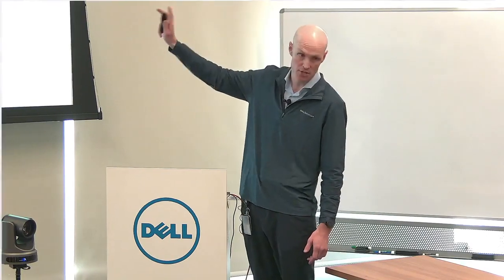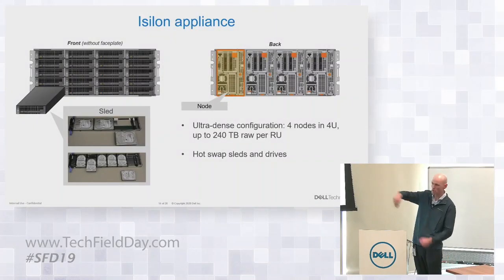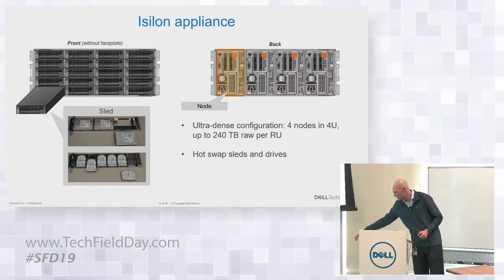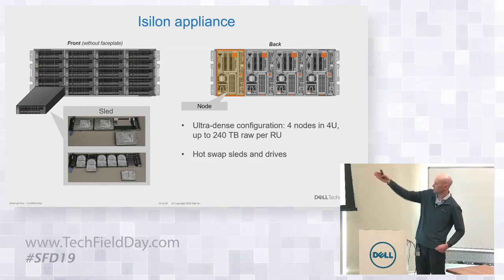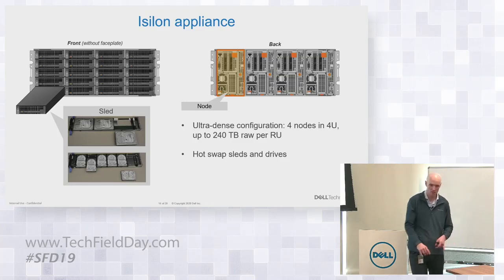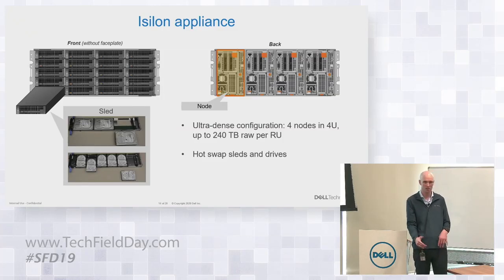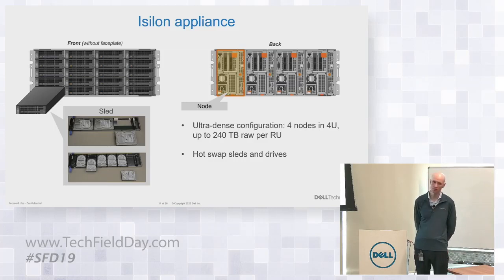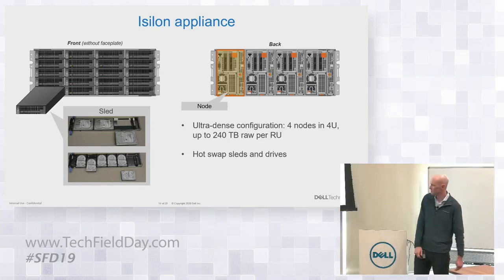This is what our current Generation 6 hardware looks like — a 4RU box with 4 nodes in a box, extremely dense. There are five sleds on the front; you pull a sled out and depending on the type, you've either got three-and-a-half-inch drives or two-and-a-half-inch drives, either SSDs or spinning drives. All of these Gen 6 systems also have some back drives that are used for metadata caching. So regardless of which nodes you buy in Gen 6, they all have some degree of SSD at a minimum for metadata caching to accelerate the user experience. It is one drive type per node.